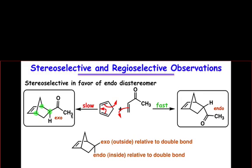There are two stereochemical possibilities in terms of the relative stereochemistry between the stereocenter on the former dienophile and the new stereocenters on the former diene. The substituent on the dienophile can either be on the same side as the carbon bridge — called the exo stereoisomer — or on the opposite side of the two-carbon bridge, called the endo stereoisomer, because the substituent is closer to the double bond in the endo. So which is favored, the endo or exo stereoisomer?